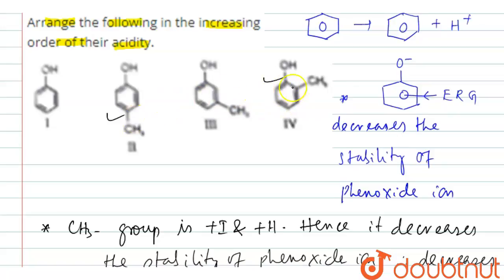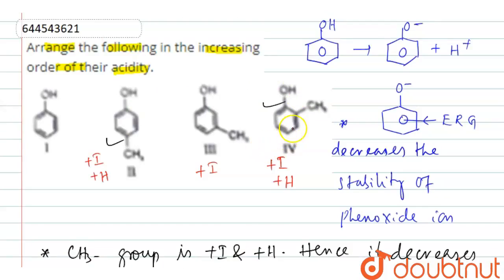But the only difference is in the +I effect. Since the +I effect is more in case of compound 4, therefore 4 is the least acidic one.